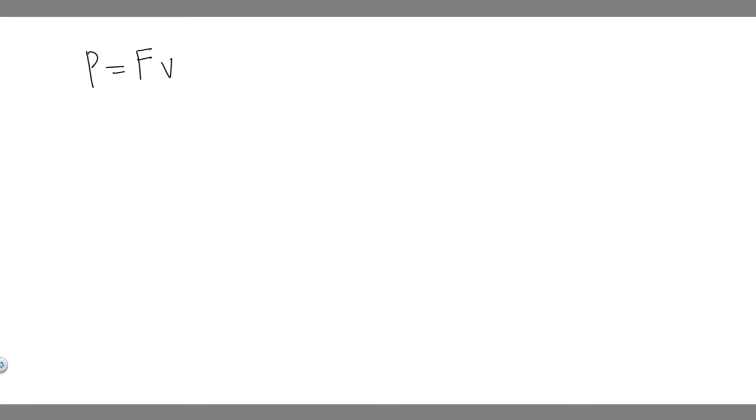This is a formula you can use, and keep in mind what we're trying to find here. We're trying to find the total force resisting the motor. So what we want to do is solve for F. We can divide both sides by V, and you'll get that force is equal to power over velocity. So if you have a power and you have a velocity, you can find the force.